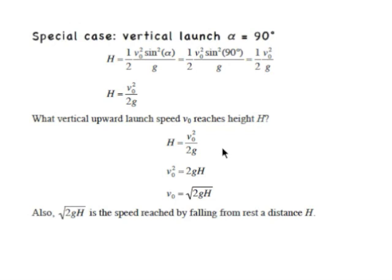Now we can invert this if we want, and find out what initial speed V0, if fired straight up, will get us to a height H. So we start with this equation, and we're going to solve for V0.